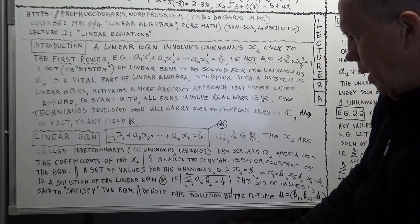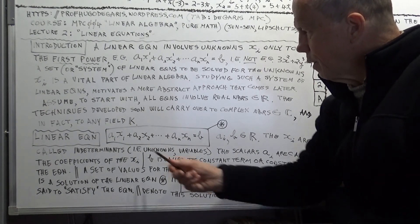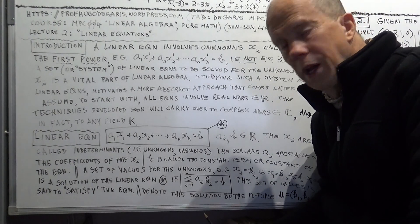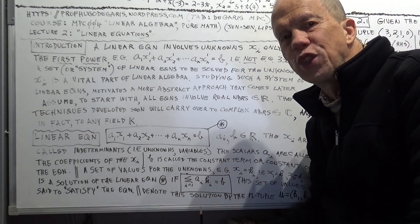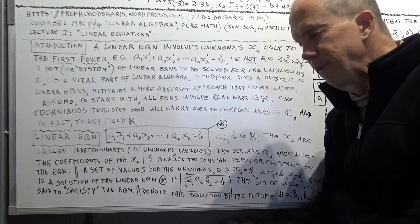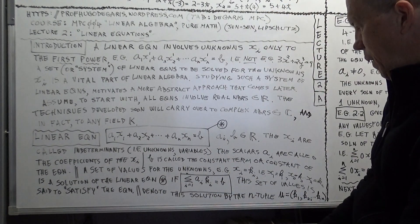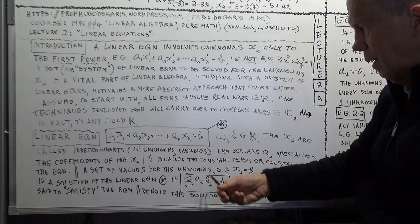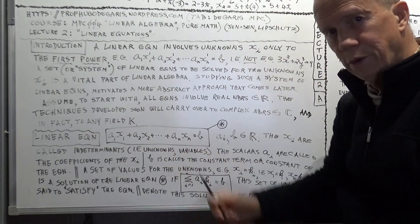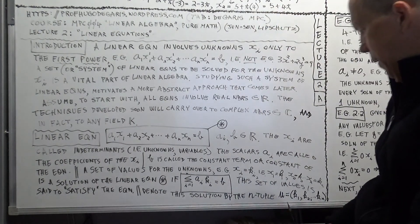If you have an n-tuple of k's — actual numbers where k1 is the value for x1, k2 for x2, and so on — that n-tuple is said to satisfy the equation, meaning it is a solution of the equation. You'll probably hear me say 'this n-tuple satisfies this equation' quite a few times. The solution is an n-tuple because you have n of these x's, and similarly n coefficients a's.